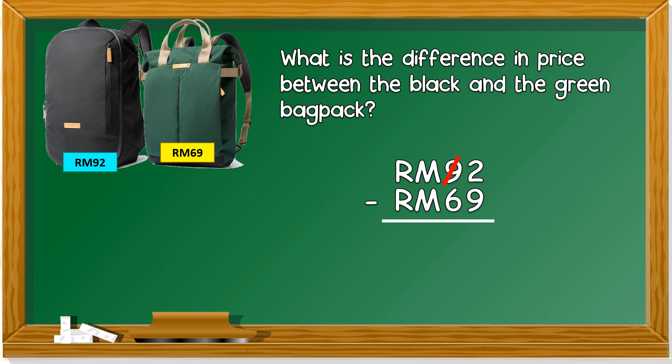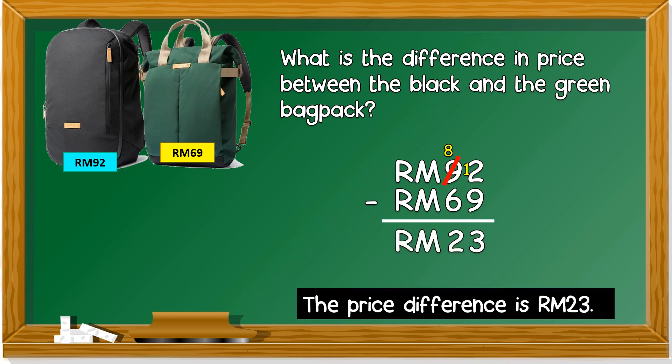So we get 92 ringgit minus 69 ringgit. Can two minus nine? No, we have to borrow from the neighbor. When we borrow one, nine becomes eight, then we put 1 to the side so it becomes 12. 12 minus 9 — if you are not good at subtraction, put the smaller value in your mouth, close all your fingers, and count up to the larger number. Nine in your mouth, count: 10, 11, 12 — three fingers open. Then 8 minus 6 is 2. The price difference is 23 ringgit.